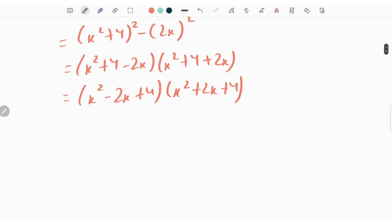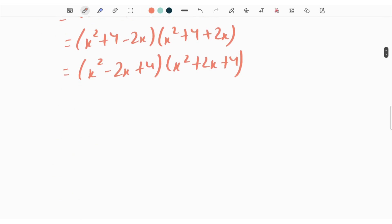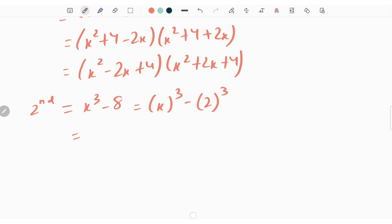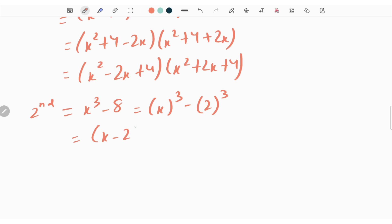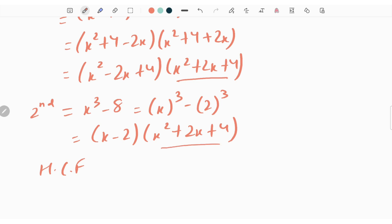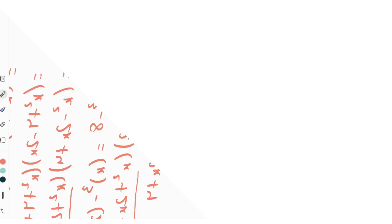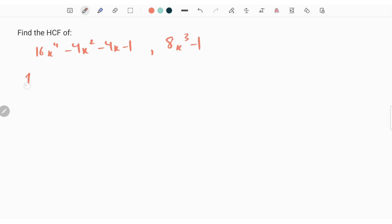This equals x square plus 4 whole square minus 2x whole square, which is in the form of a square minus b square. So we write it as x square plus 4 minus 2x times of x square plus 4 plus 2x, giving x square minus 2x plus 4 times of x square plus 2x plus 4. The second expression is x cube minus 8, which equals x cube minus 2 cube, in the form of a cube minus b cube, giving x minus 2 times of x square plus 2x plus 4. Since x square plus 2x plus 4 is common, the SCF is x square plus 2x plus 4.